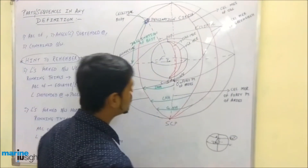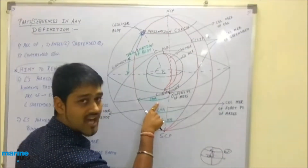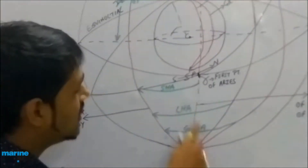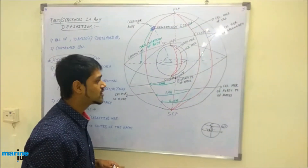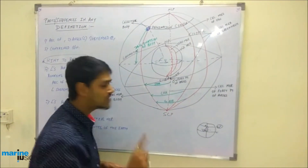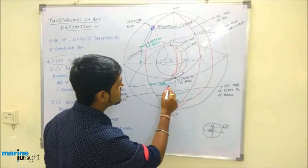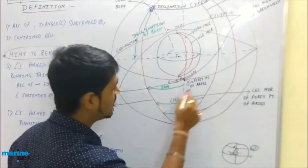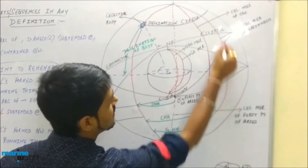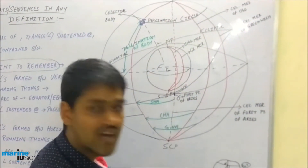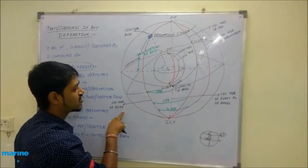Moving on to SHA, LHA, and GHA — sequentially called sidereal hour angle, local hour angle, and Greenwich hour angle. Before going into their definitions, remember two basic points. First, from where they start: SHA starts from the first point of Aries, LHA starts from the celestial meridian of the observer, and GHA starts from the celestial meridian of Greenwich. They all end at the celestial meridian of the body.